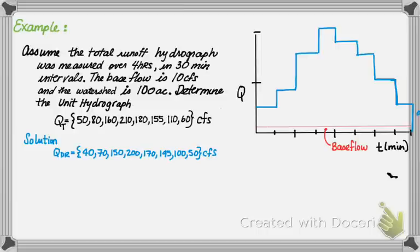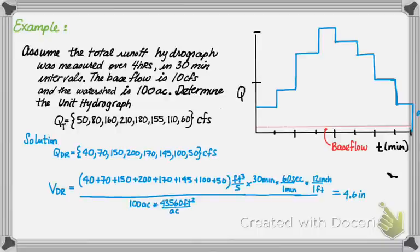Next, we're going to find the volume. We're going to find the area between the blue curve and the red line, and divide it by the watershed area. We sum up all the flows of the direct runoff hydrograph, multiply it by the time step of 30 minutes and the conversion factor of 60 seconds. We want to convert the volume into inches, so we do 12 inches per foot, divided by the watershed area of 100 acres, and we convert that into square feet of 43,560. You will get 4.6 inches.